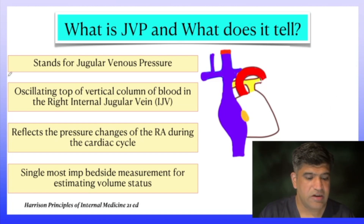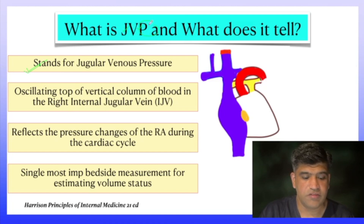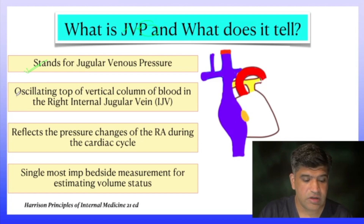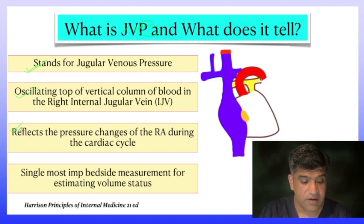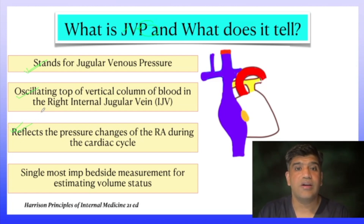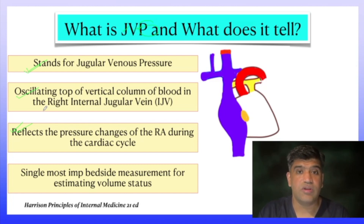JVP stands for jugular venous pressure: J for jugular, V for venous, and P for pressure. It is the oscillating top of the vertical column in the right internal jugular vein — mind you, the right internal jugular vein. It reflects the pressure changes in the right atrium during the cardiac cycle, so JVP tells us about right atrial pressure changes.